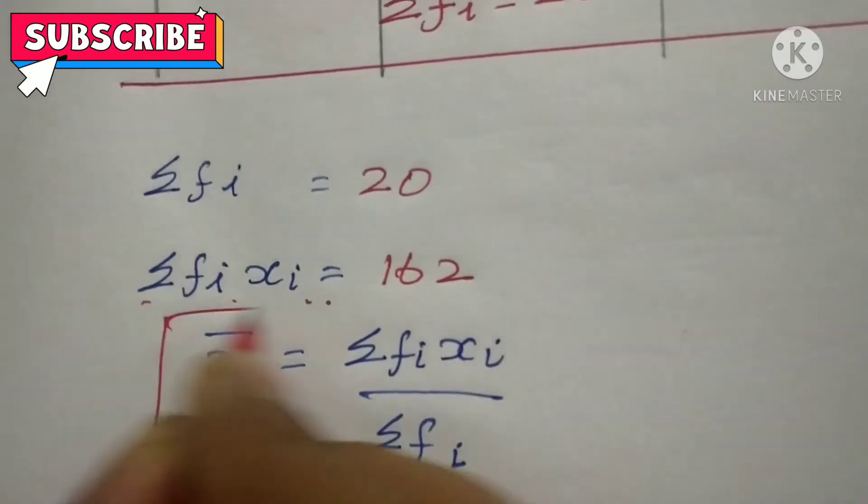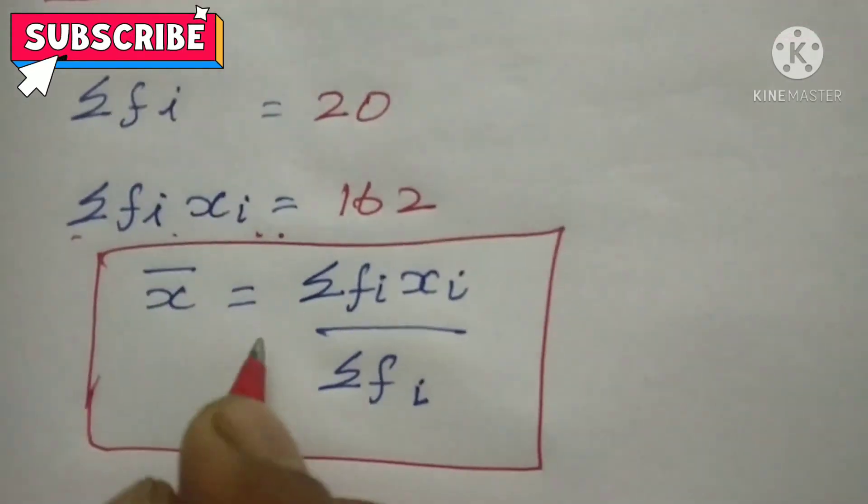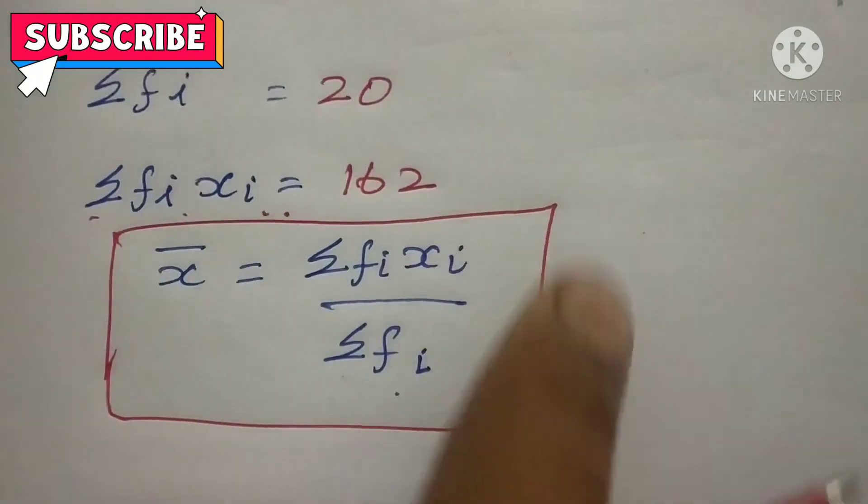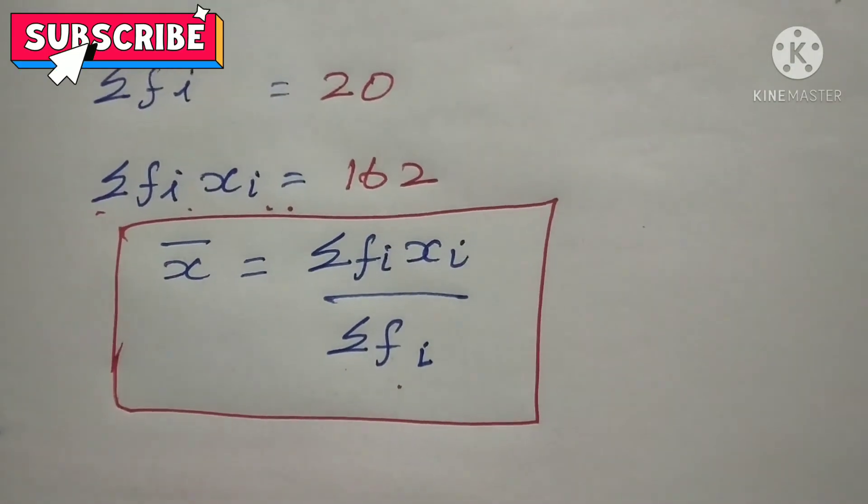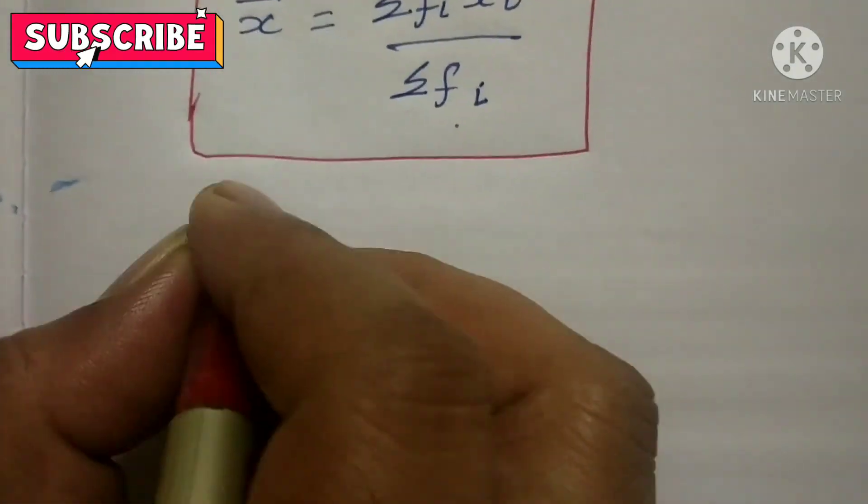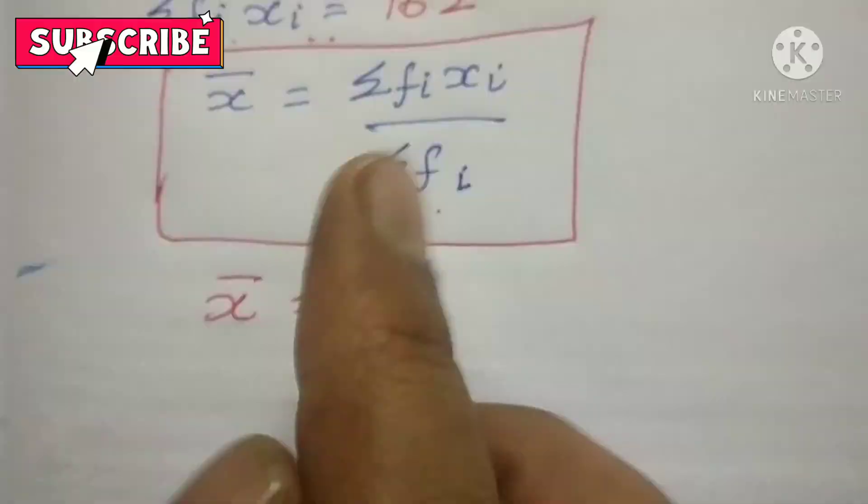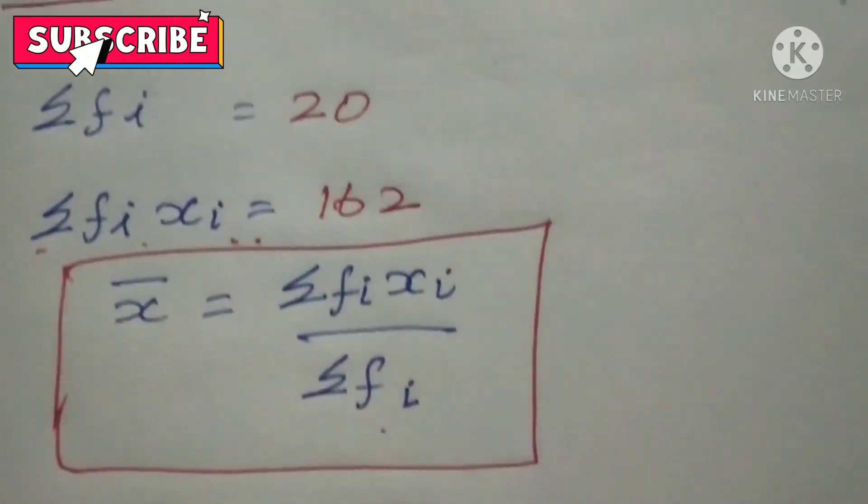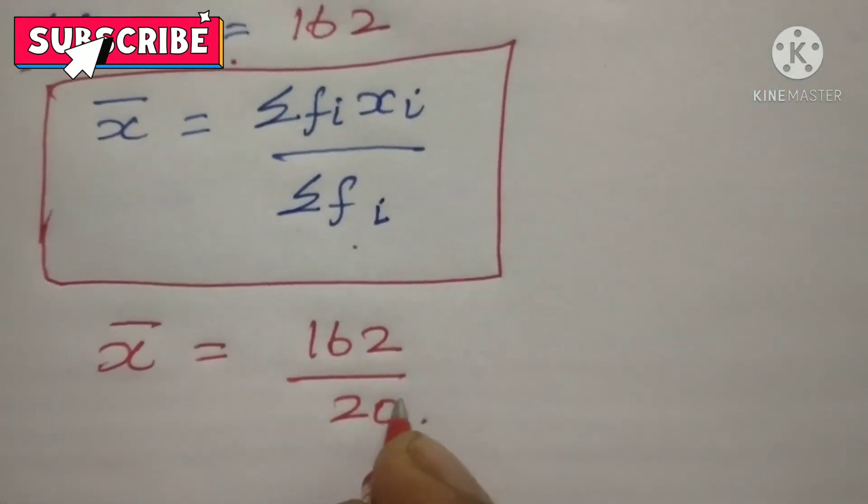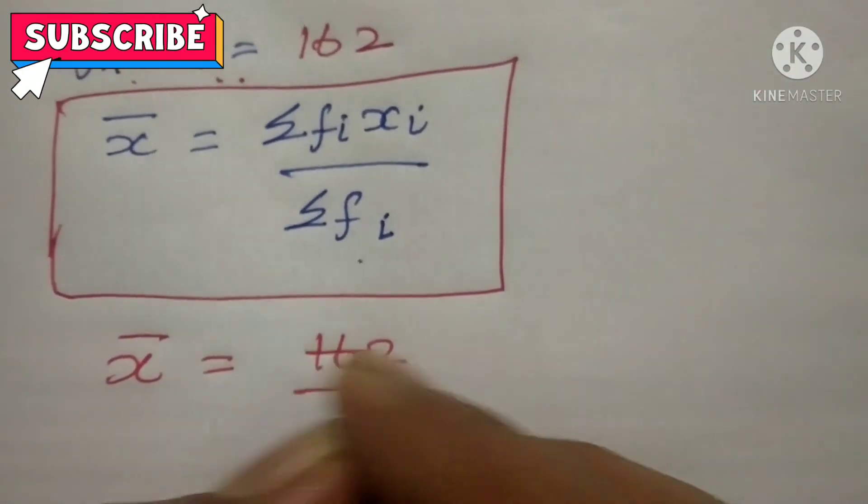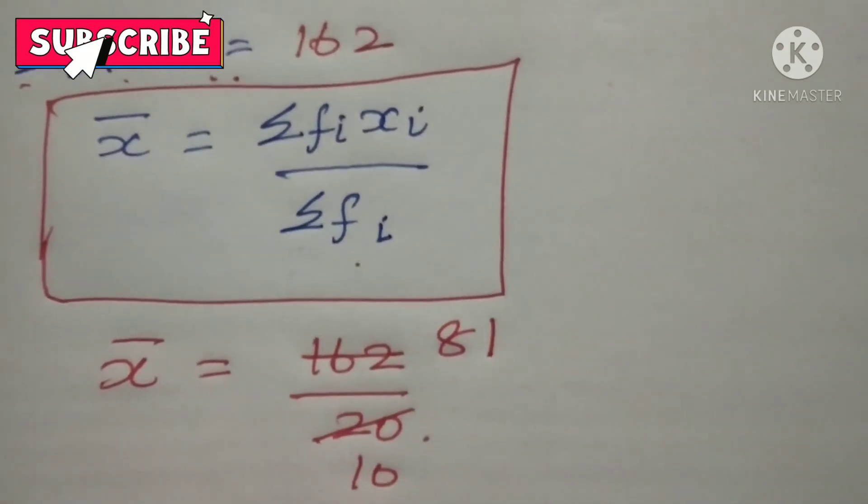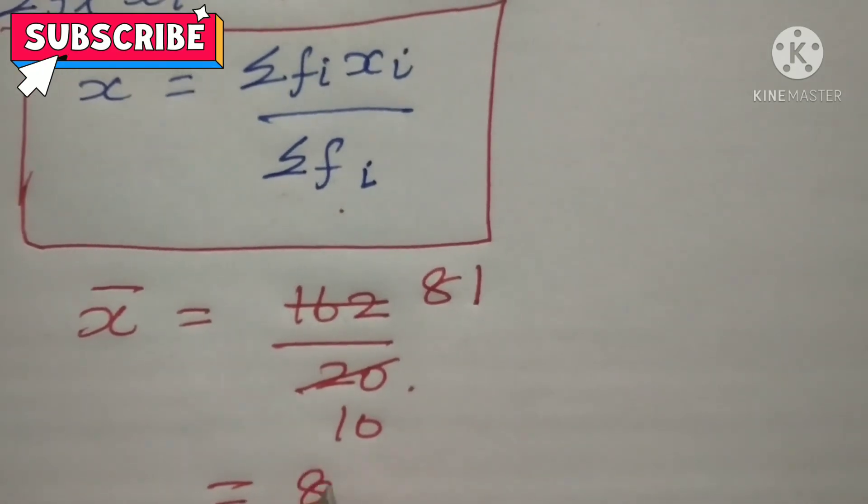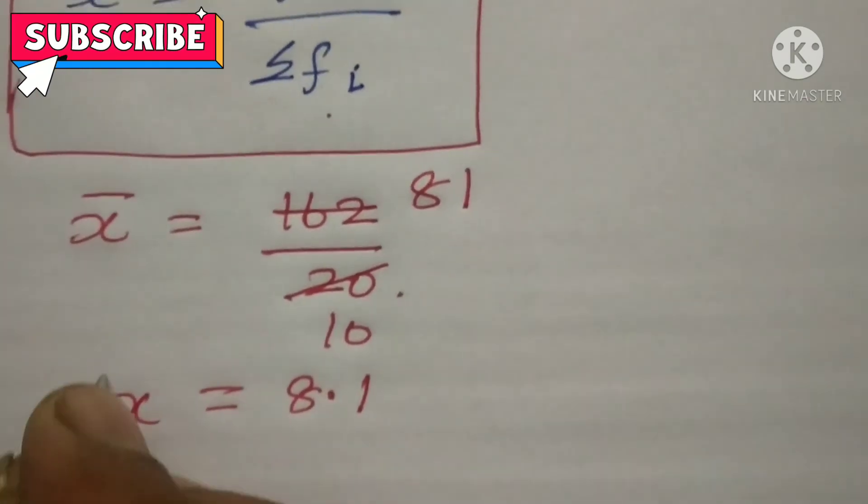Then you have to write the formula. That is X bar equals sigma Fi Xi divided by sigma Fi. You have to draw a table around it. Then you have to find X bar equals sigma Fi Xi, that is 162 divided by sigma Fi is 20. Then it is divisible by 2. So 10 twos are 20. Then 8 twos are 16. So what is the answer? 8.1. X bar equals 8.1.